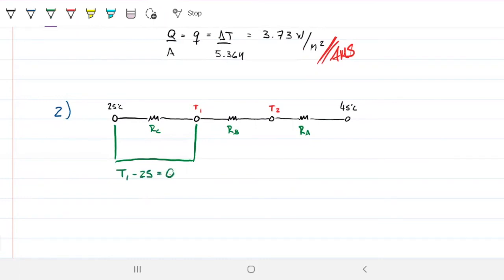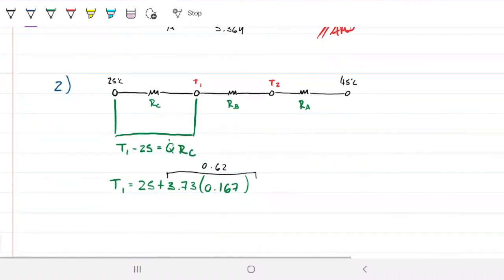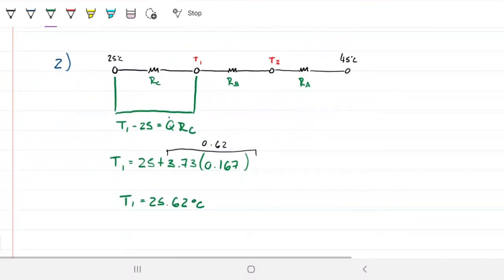So this is just going to be the energy we found times the resistance that we found. In this case, resistance C. So in other words, my T1 is just 25 plus my 3.73 times my resistance C, which was 0.167. And this gives us 0.62. So this difference here is just 0.62 difference in temperature in Kelvin or Celsius. In this case, we're doing Celsius because we chose to do Celsius here, which means my T1 is simply 25.62 degrees Celsius. And that is our answer for part two.